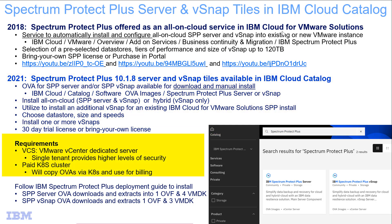The requirements for this are a VCS, which is a VMware vCenter dedicated server. Because it's single tenant, it provides higher levels of security than a shared server. You will also need to have a paid Kubernetes cluster, which is used to copy the OVAs and for billing. The downloaded Spectrum Protect Plus Server OVA will extract automatically into one OVF and four VMDKs, and the SPP vSnap will extract into one OVF and three VMDKs.